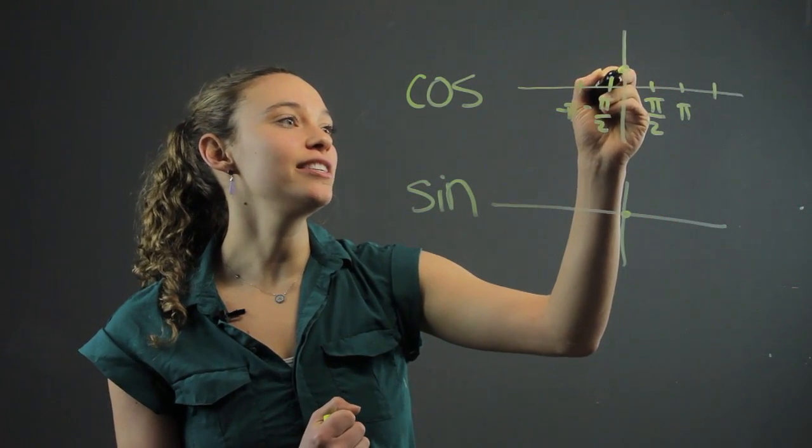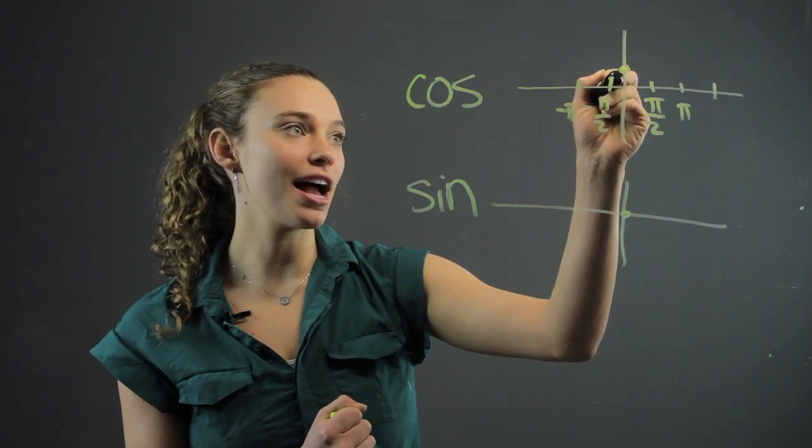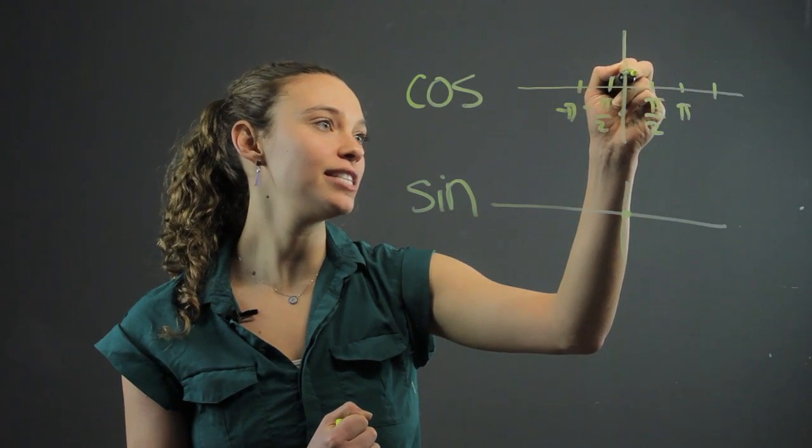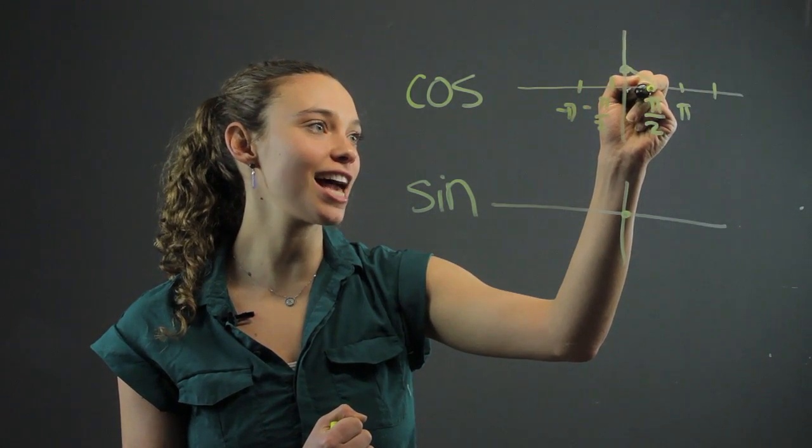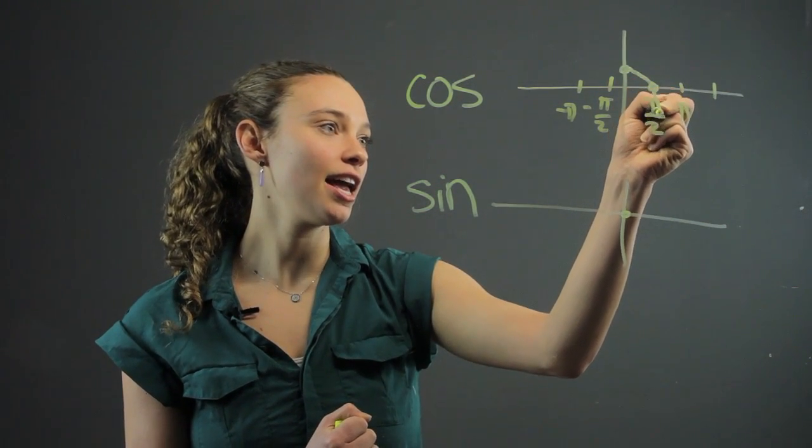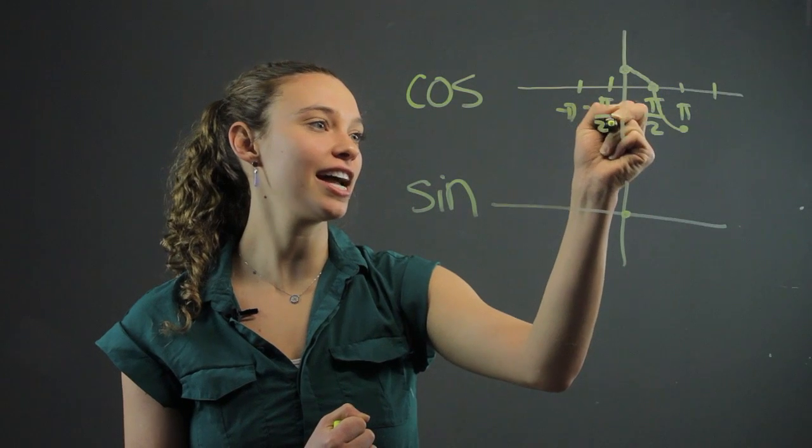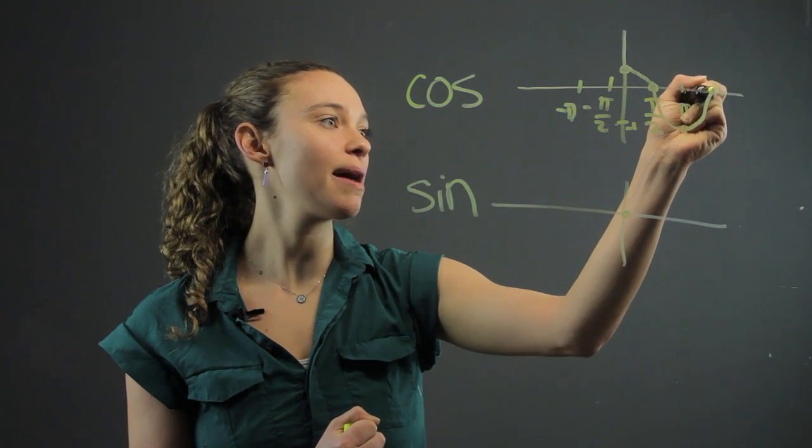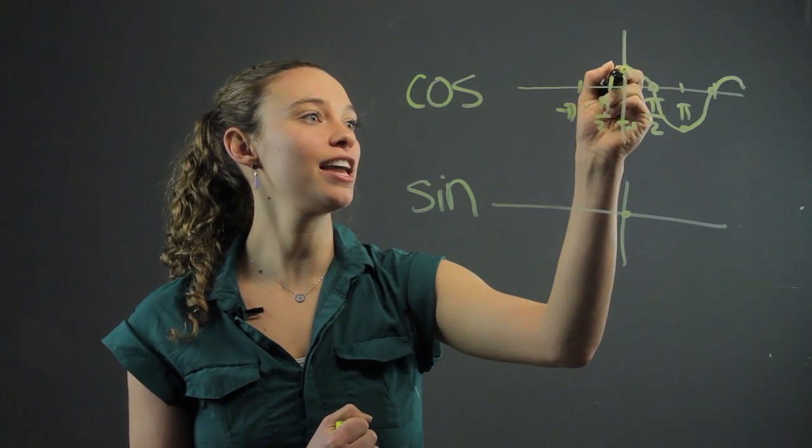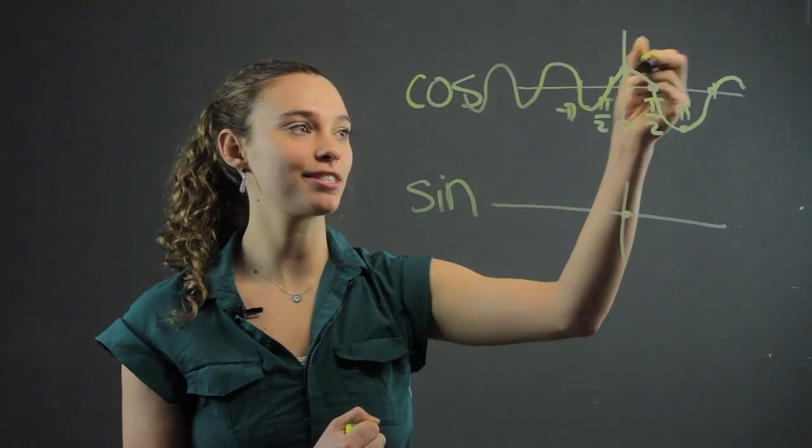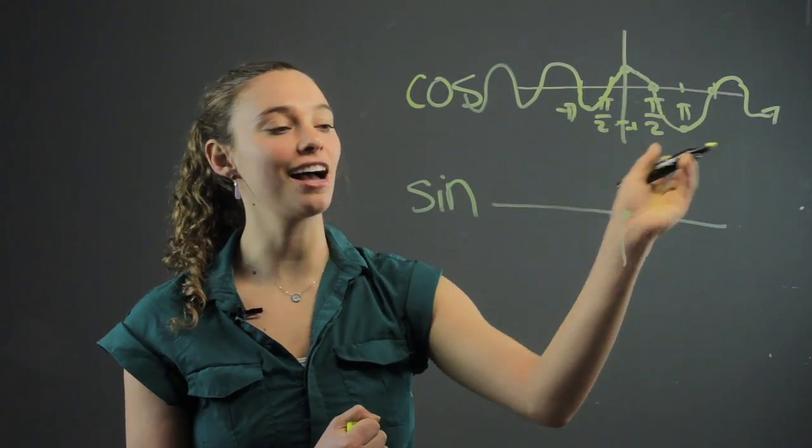So it's going to intercept the y-axis here at 0, 1, and cosine is then going to come down and intercept the x-axis at pi over 2, and it's going to hit this point, negative 1 pi, and then it's going to come back up again, and it's going to make this wave function. So it looks like this if it keeps going. It's going to keep going like that.